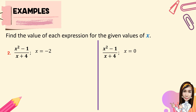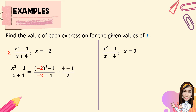For number 2, we have x squared minus 1 all over x plus 4. When x equals negative 2, substitute into the expression: the quantity negative 2 squared minus 1, all over negative 2 plus 4. Starting with the exponent, negative 2 squared is positive 4. So we have 4 minus 1 all over negative 2 plus 4. Following the sign of the larger absolute value gives us positive 2, then minus 1, giving 3 over 2, or 1 and 1 half. The value when x equals negative 2 is 1 and 1 half.